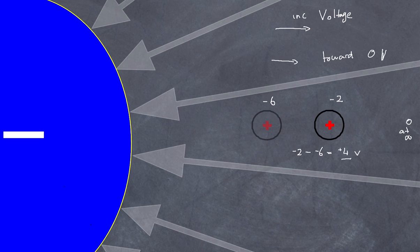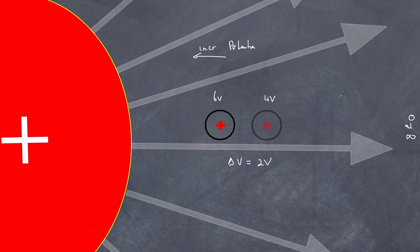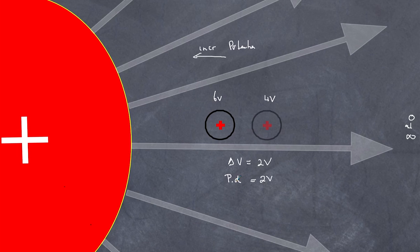In both situations, what we're often interested in is not the actual potential at a single point but the difference between two positions. This change in potential is referred to as the potential difference, and it is still measured in volts. In everyday electrical circuits, we're not so much interested in potential relative to zero, but rather the potential difference between two points separated by a certain distance.